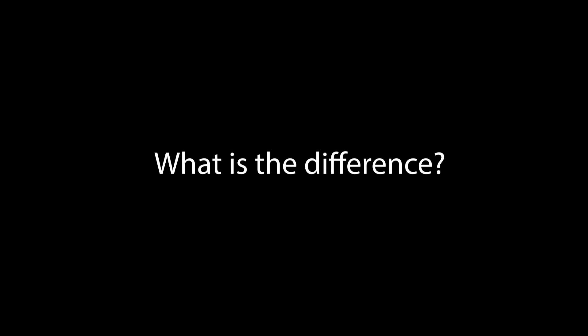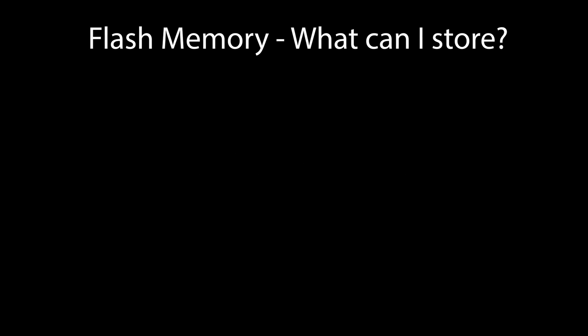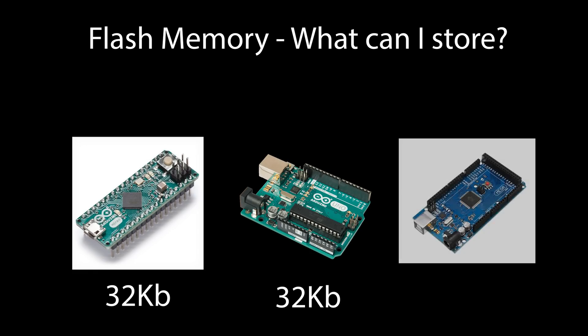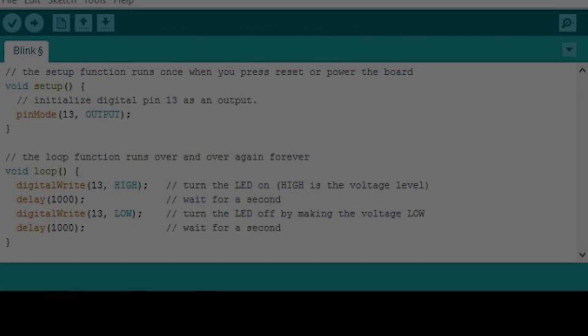The space where your programs are stored on the Arduino board is called the flash memory. Whilst the memory on the Uno and Micro are the same at 32 kilobytes, the Mega 2560 has 256 kilobytes, which gives it about eight times more space. The flash memory simply means how big of a sketch or code you can upload to your Arduino, and therefore you can have a pretty hefty piece of code with the Mega 2560.